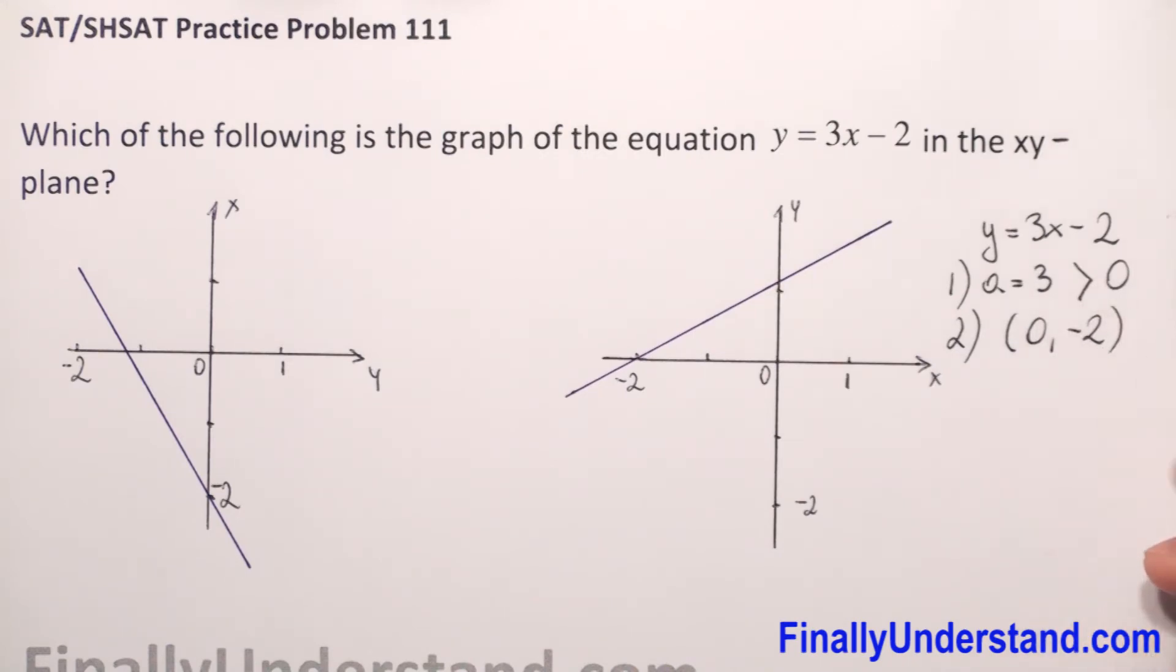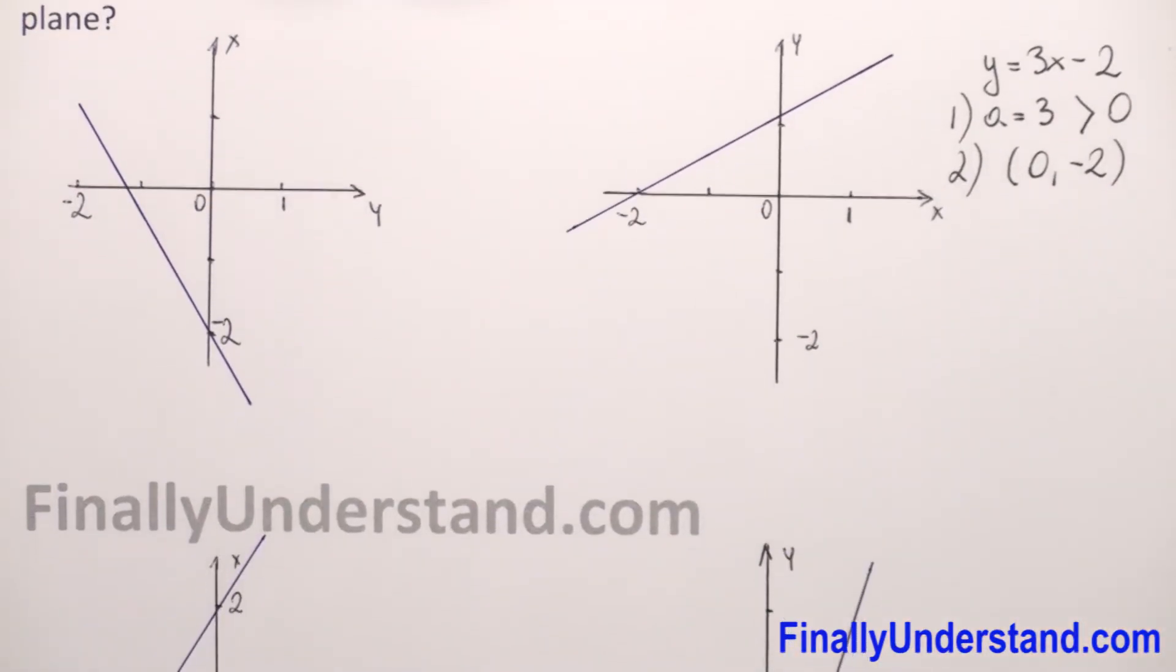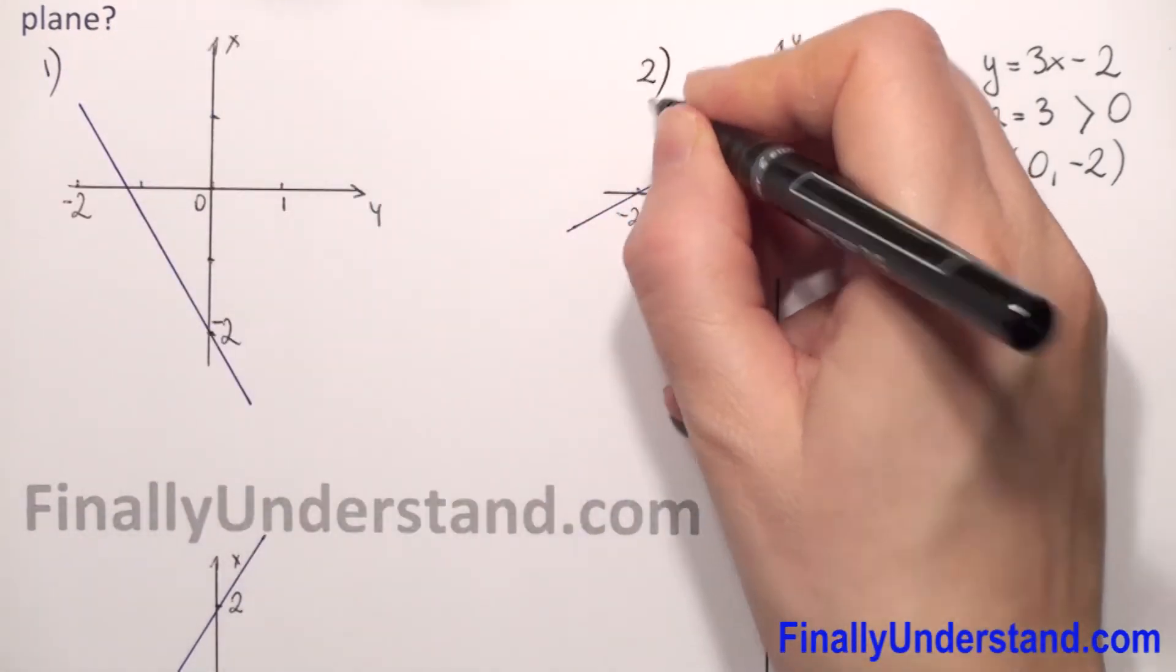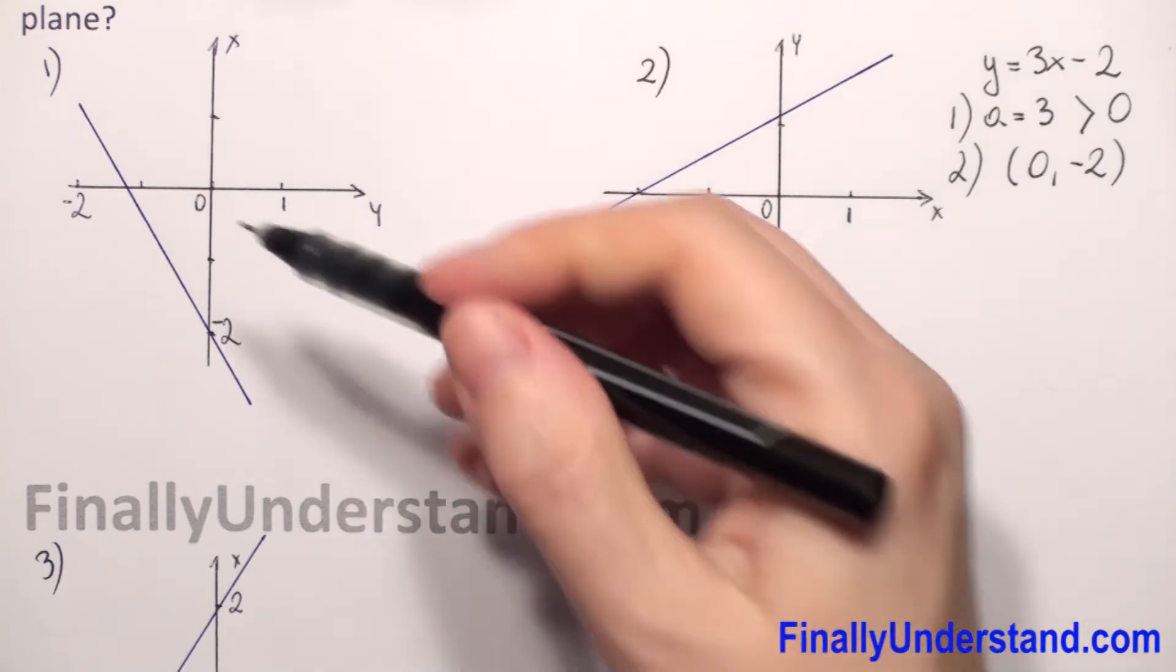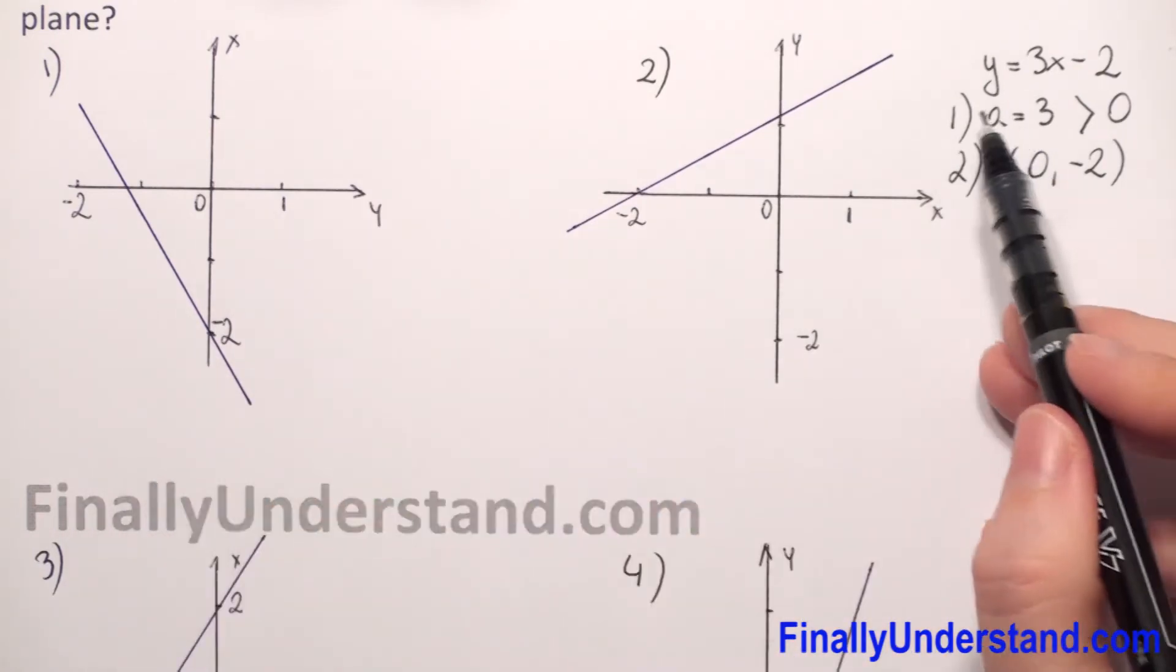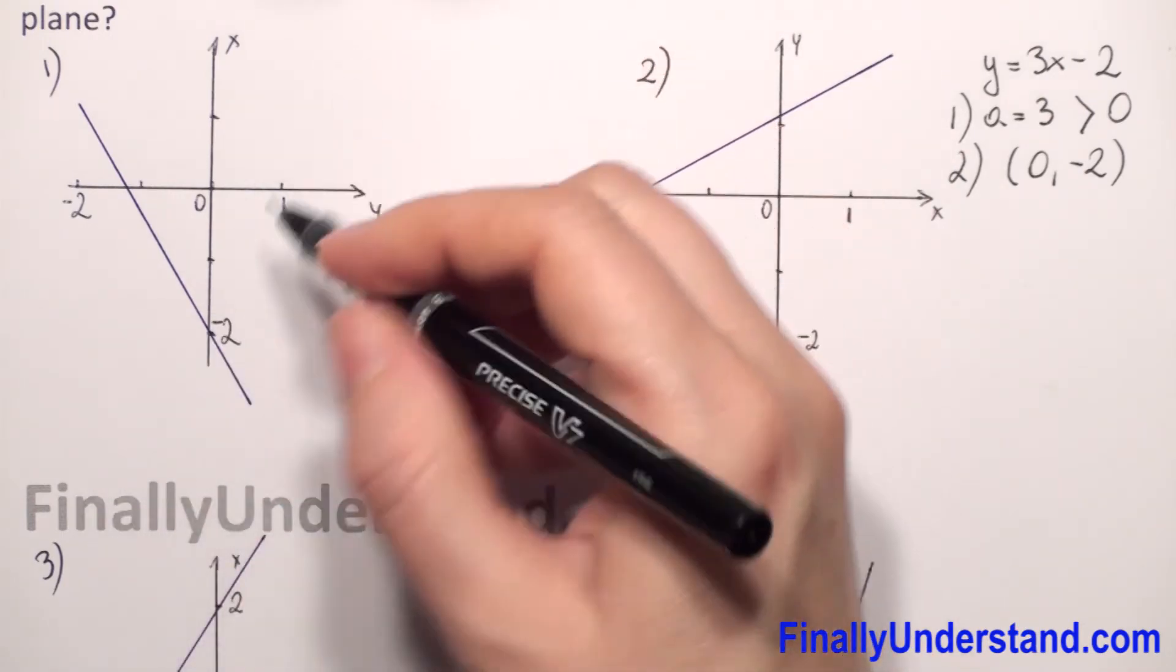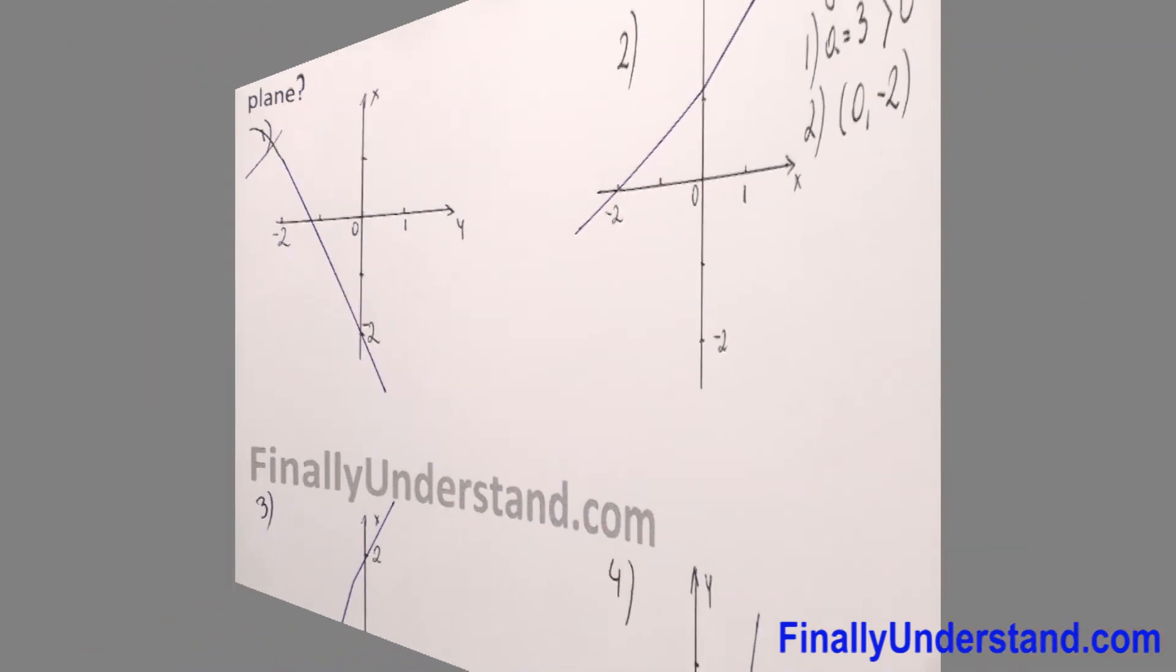So now let's see our lines. We have, for example, this is our 1, 2, 3, and 4. Here we have that our function is going down. So for sure it's not our function, because our function has slope positive, so it should go up. So we can cross that. This is not our function.